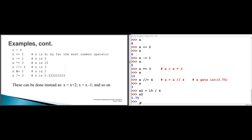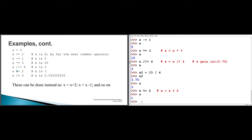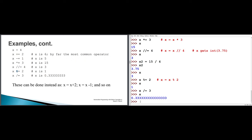The modulus operator gives the remainder after division. If I say x mod-gets 2, this is x gets x mod 2. 3 mod 2 has a remainder of 1, so x equals 1. Then x divide-gets 3: ordinary division always results in a float regardless of the types of the two operands. So integer 1 divided by integer 3 is still a floating point value.